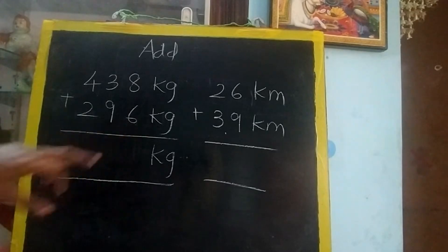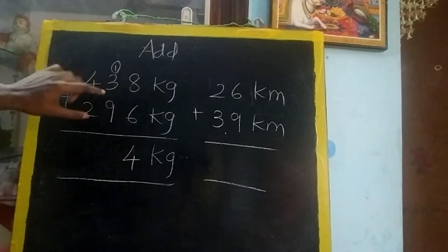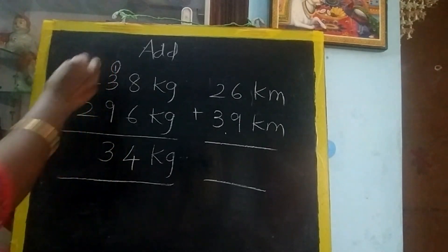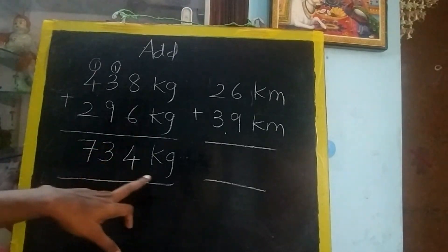So first we start from 1's place. 8 plus 6, 14. So 4 here, 1 carry over. 1 plus 3, 4. 4 plus 9, 13. 1 carry over. 1 plus 4, 5. 5 plus 2, 7. So the answer is 734 kg.